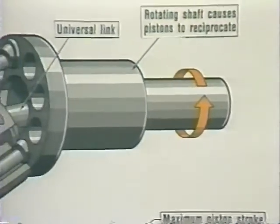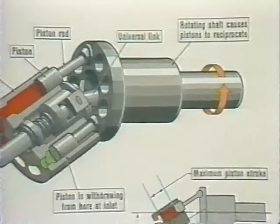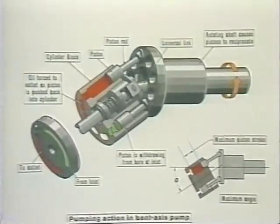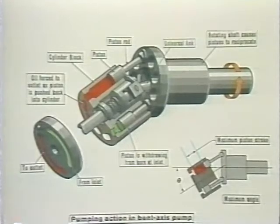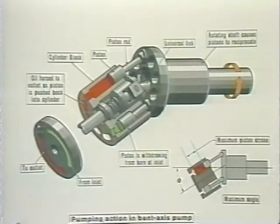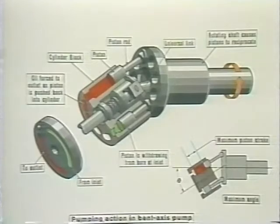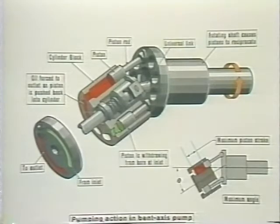In a bent axis pump, the pistons rotate axially within a cylinder block, which is at an angle to the drive shaft. As you can see, the pistons at the top have been pulled outwards and those at the bottom pushed in. The distance between their relative positions determines their stroke length and displacement as the entire assembly rotates. Changing the angle of the cylinder block with relation to the drive shaft enables us to vary the pump displacement.